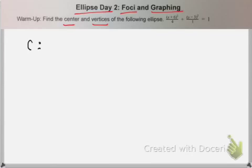Hi everybody, welcome to day two of ellipses. Today we're going to focus on finding the foci and graphing. The problem has asked us to find the center and vertices, which are going to be two very important things that we need for graphing. We know that the center is negative six, positive three.